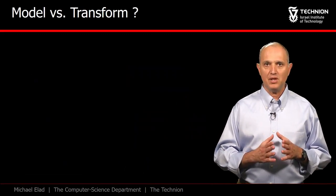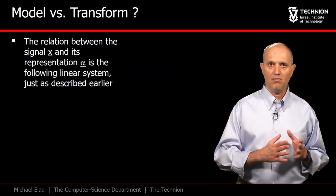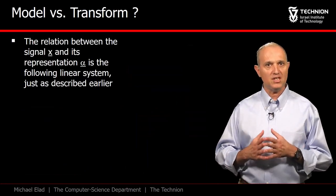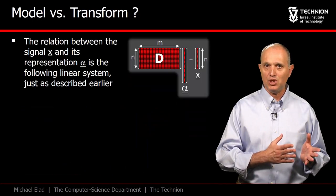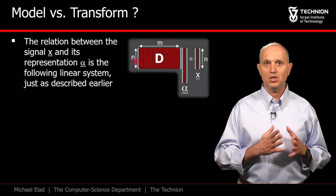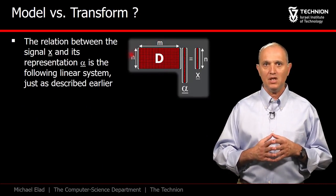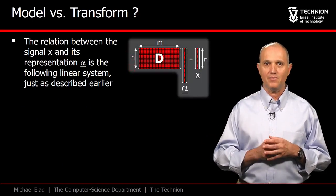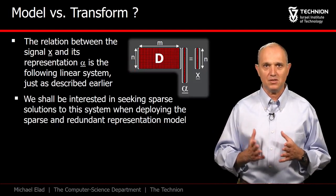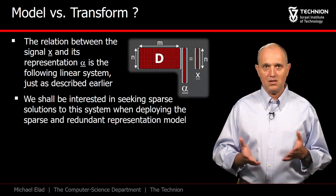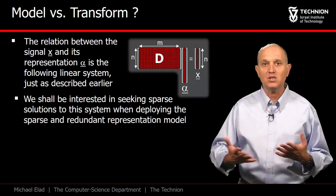Let's turn the above description into clearer mathematical terms. If the incoming signal is the column vector x, and the representation is alpha, then the relation between the two is this linear system in which the matrix D is the dictionary, and its columns are the 256 atoms, each of them of length 64. Given D and x, we seek the sparsest solution of this system, in order to suggest the simplest way to describe x as a linear combination with the fewest possible atoms.